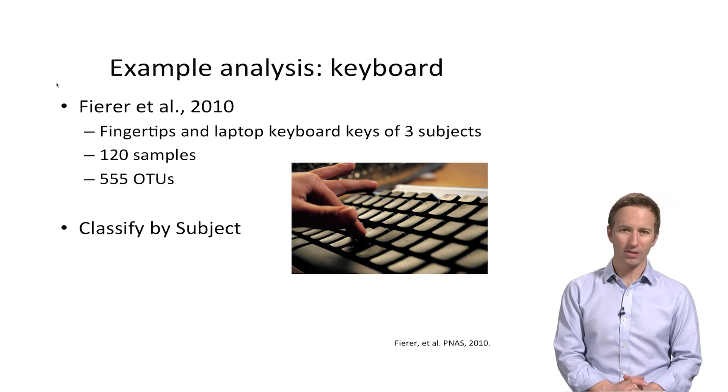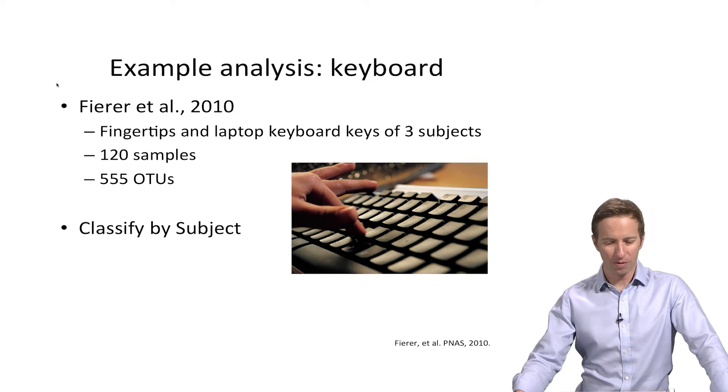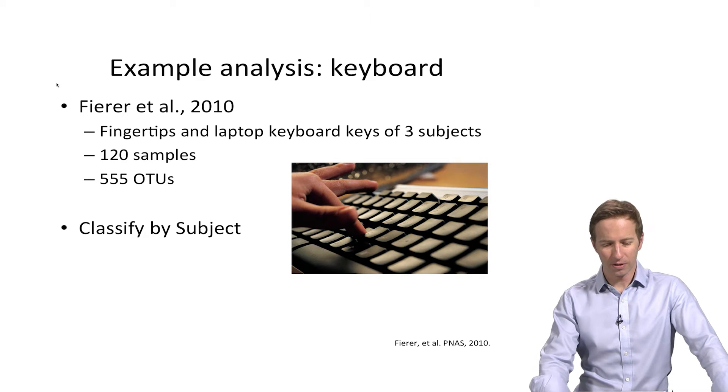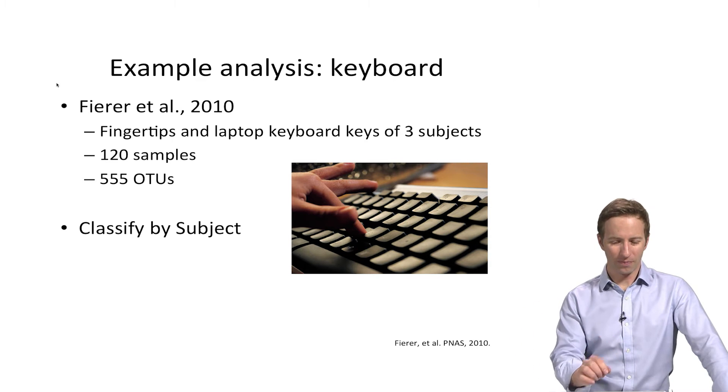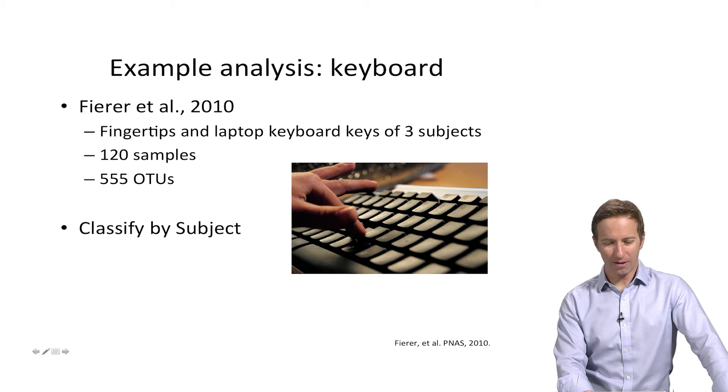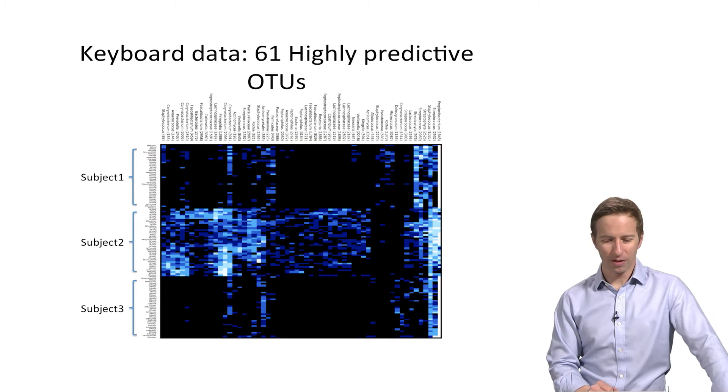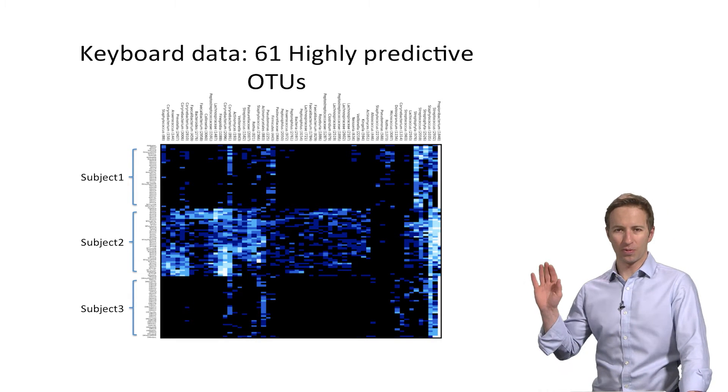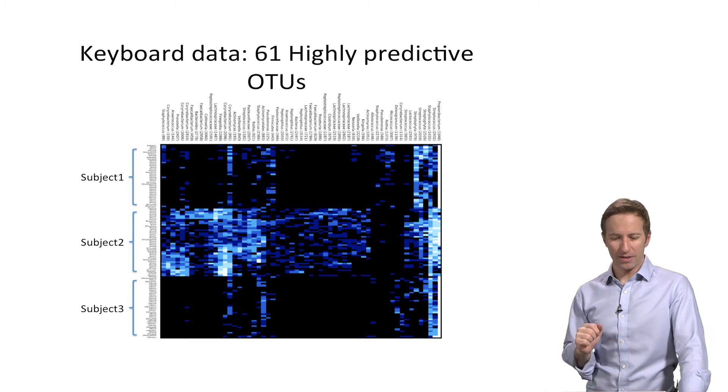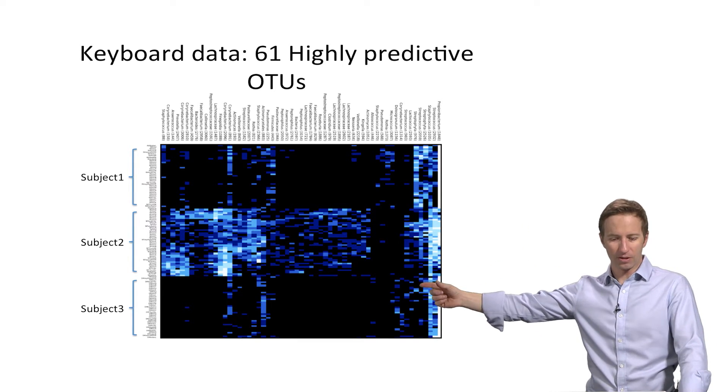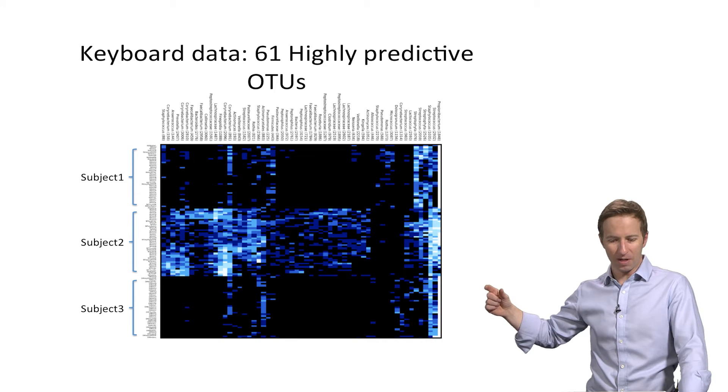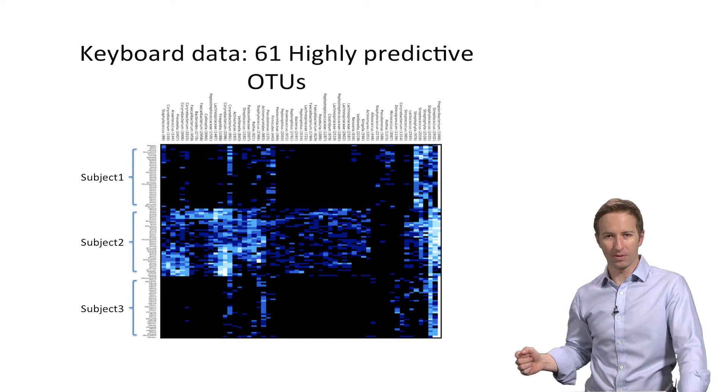Another example analysis is in forensics. So this is from data sets from Noah Fuhrer and Rob Knight and their collaborators in 2010, examining the bugs living on people's fingertips and then on their keyboards. And in the resulting data there were 120 samples from three different people with about 550 OTUs. And the goal here was to classify by subject. So here again I'm showing you the heat map. These are the most predictive OTUs in the columns. And you can see that there are some OTUs that are present only in subject 1, some that are present only in subject 2, and then maybe a few that are only absent in subject 3.